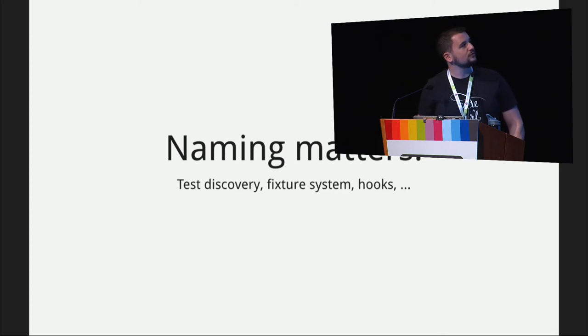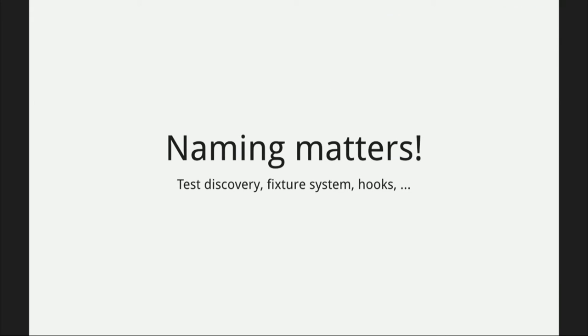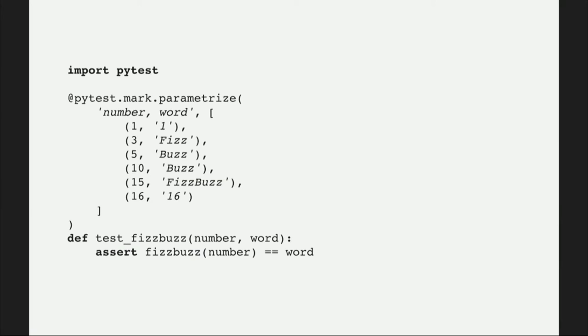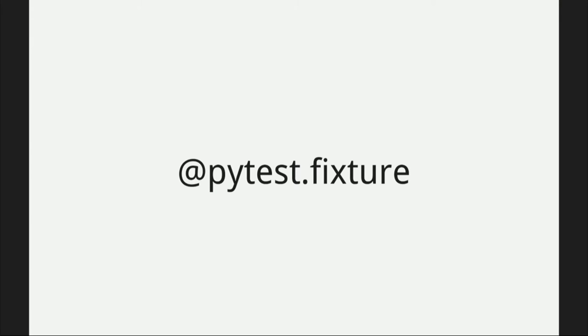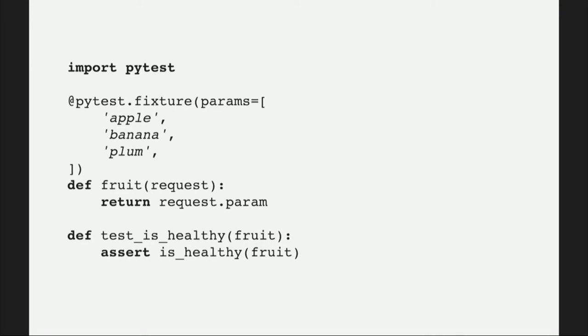The fundamentals of PyTest: names matter. Test discovery is based on a naming convention, the fixture system is based on names, and hooks need to fit a naming convention. The parameterize marker inputs values into the test function. When you run in verbose mode, you see the parameters and how they are combined, so if there's a failure you know exactly which parameter combination failed. The fixture decorator also supports the params keyword argument, so you can do the same with it.